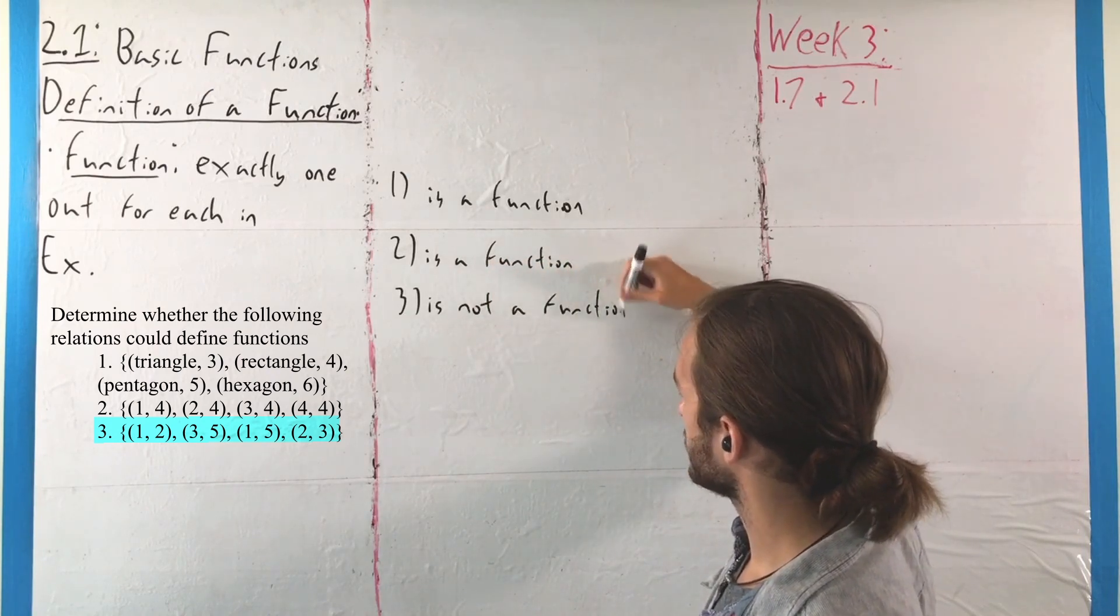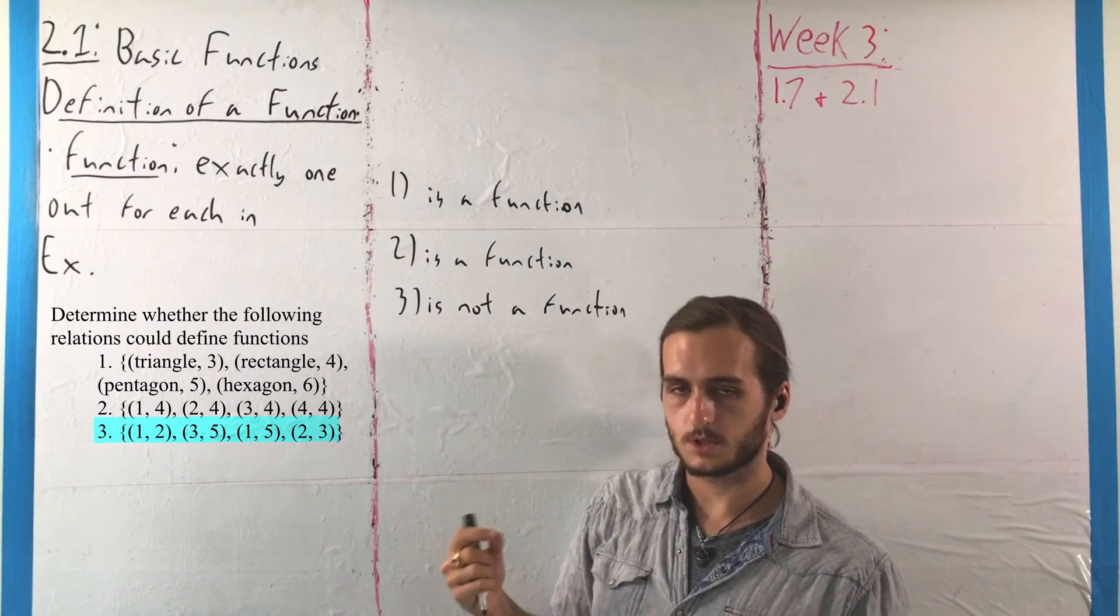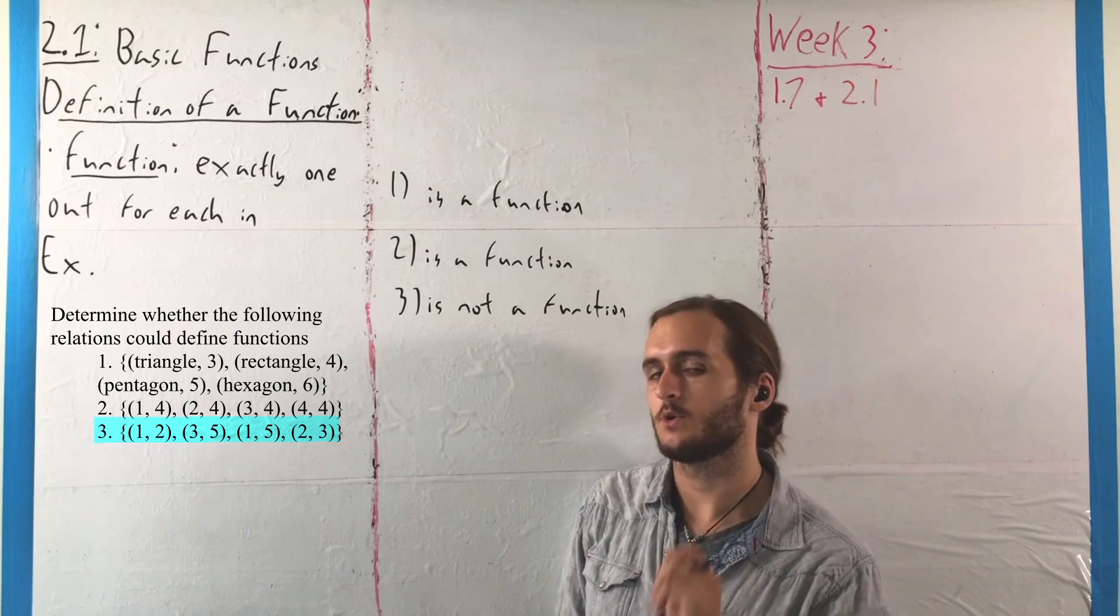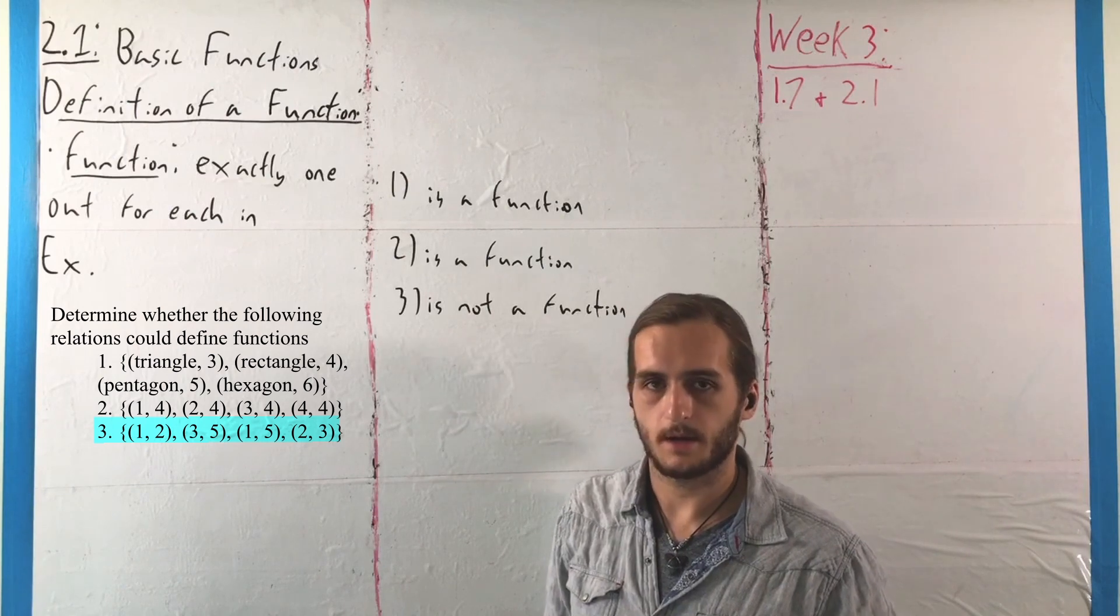Again, the defining characteristic of a function is each input only goes to one output, and we are reading left to right. 1 does not only go to a single output, it goes to 2, and that's enough to lose what we're talking about.